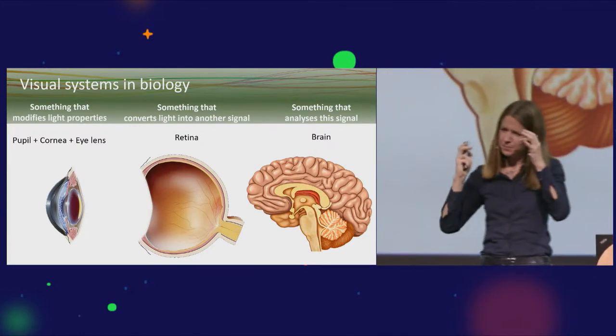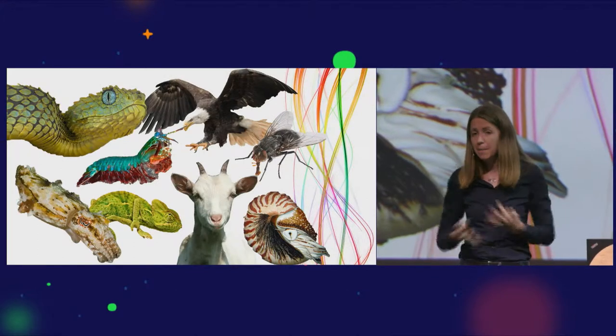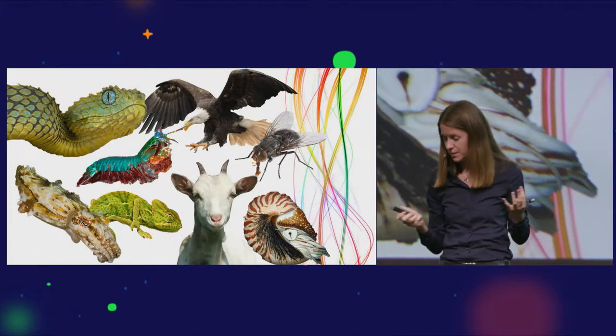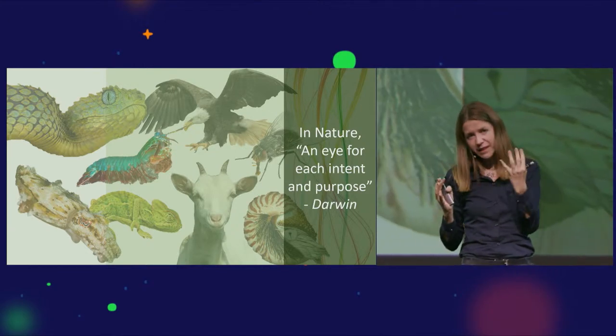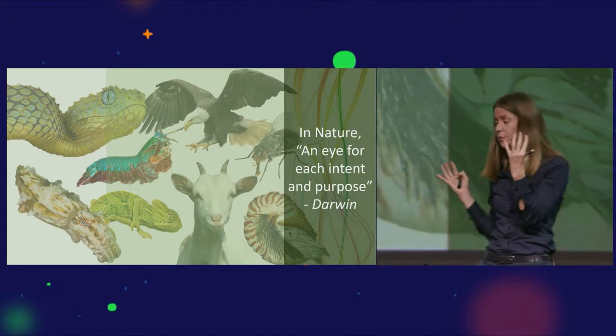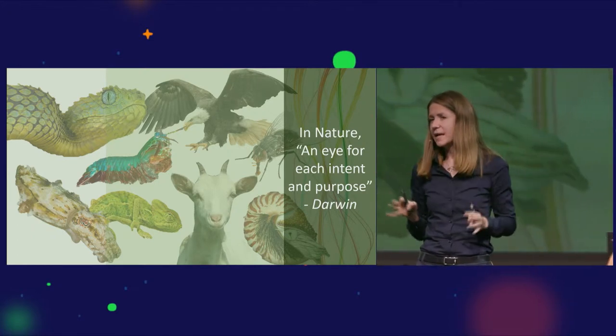In biology, all these three components are tightly interacted. Biology plays with them through evolution to create a multitude of different visual systems. Even more importantly, all these different visual systems are there for different purposes. As Darwin put it, in nature there's an eye for every purpose.